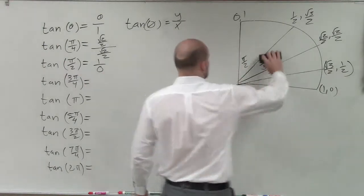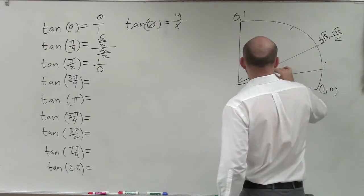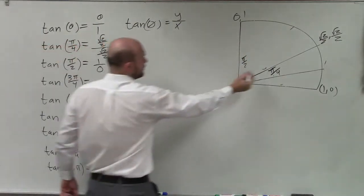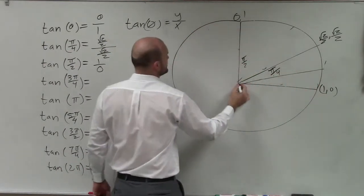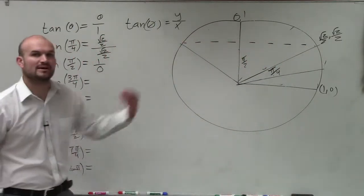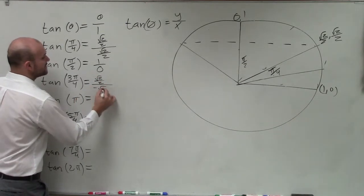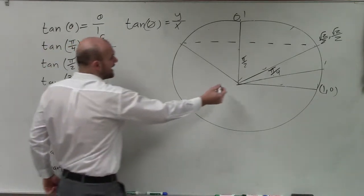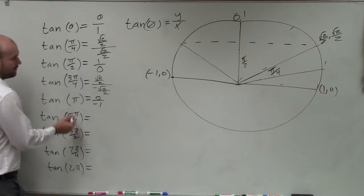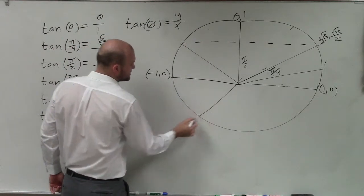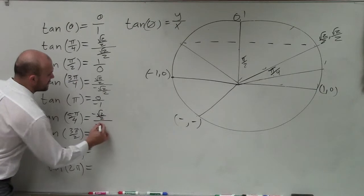We don't actually need to use all these points. The next point is 3 pi over 4. If pi over 4 is 2 pi over 4, then the next point is 3 pi over 4, which is a direct reflection of pi over 4 but in the second quadrant. Therefore the x coordinate is now negative, so it's square root of 2 over 2 divided by negative square root of 2 over 2. For pi, that's halfway around the circle — negative 1 comma 0 — so that's 0 over negative 1. For 5 pi over 4, both coordinates are negative, so it's negative square root of 2 over 2 divided by negative square root of 2 over 2.